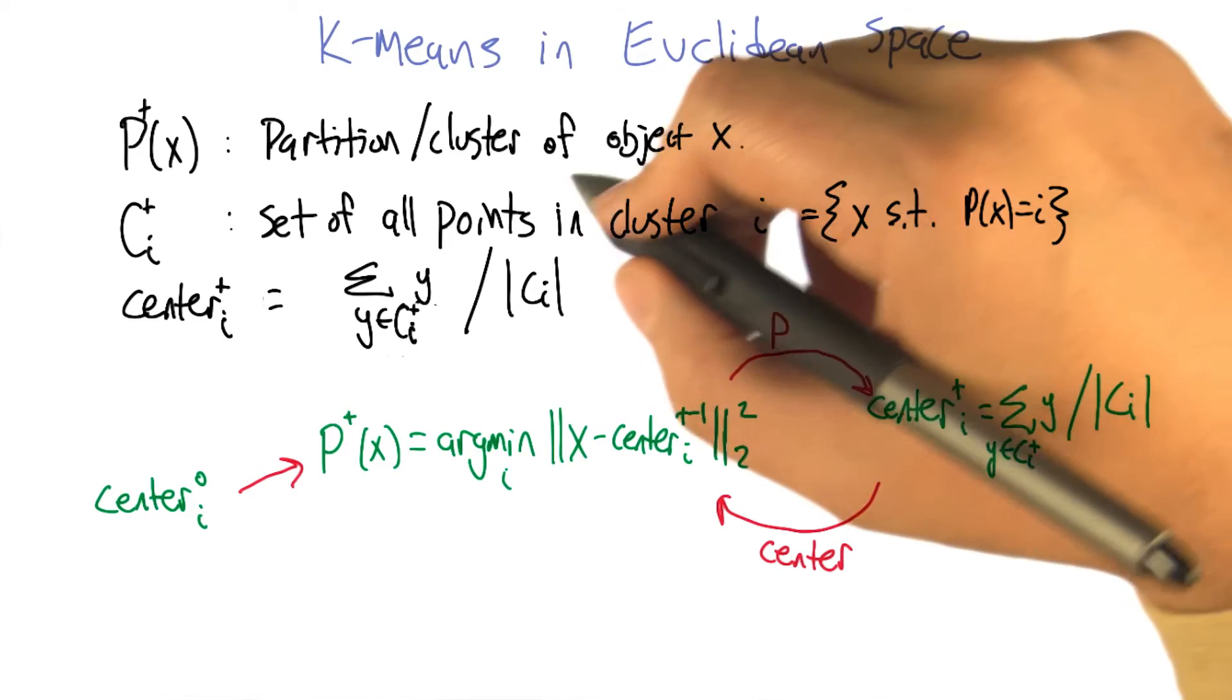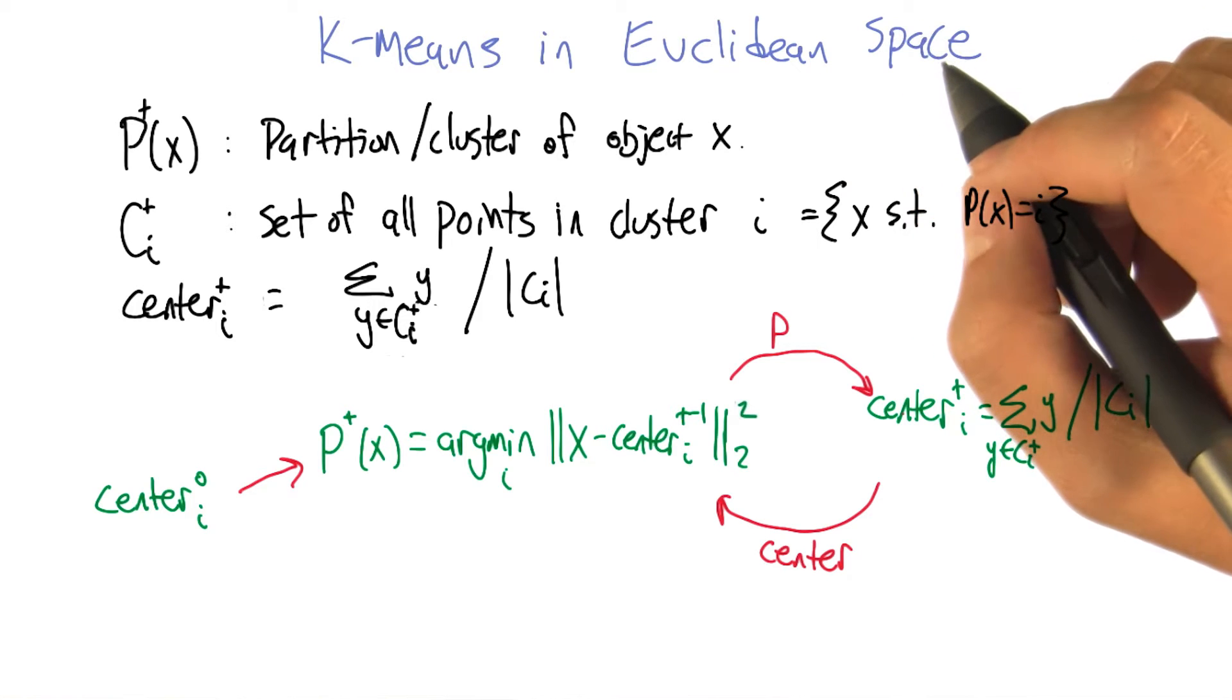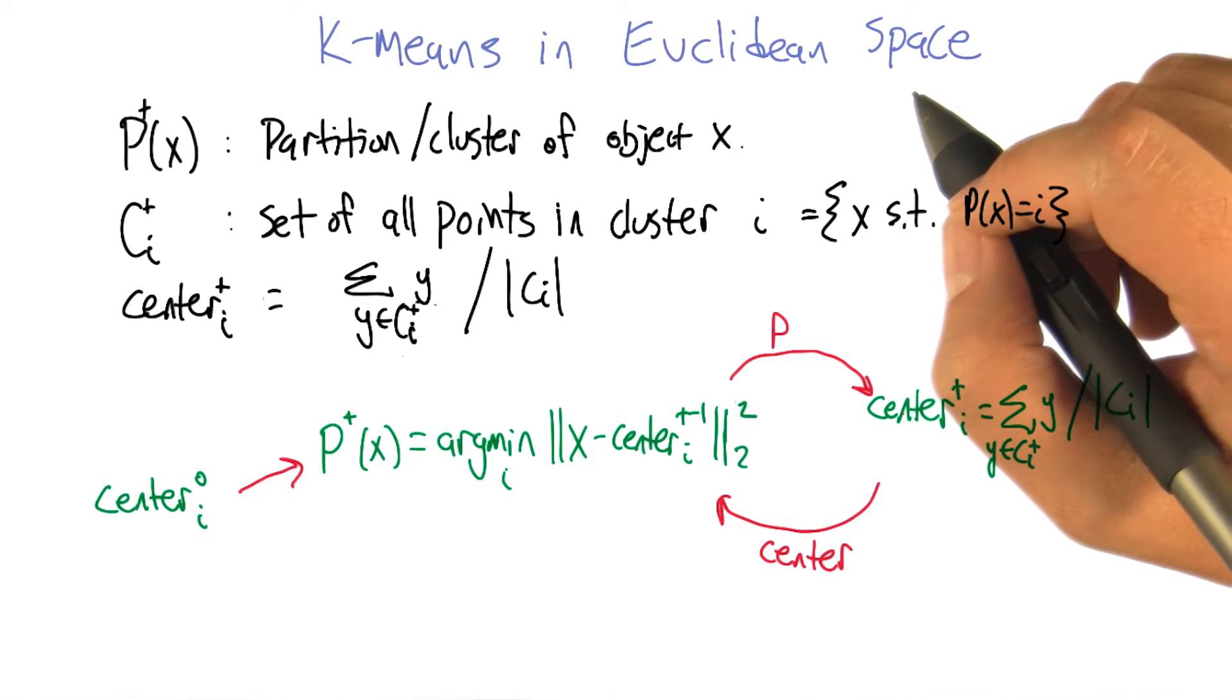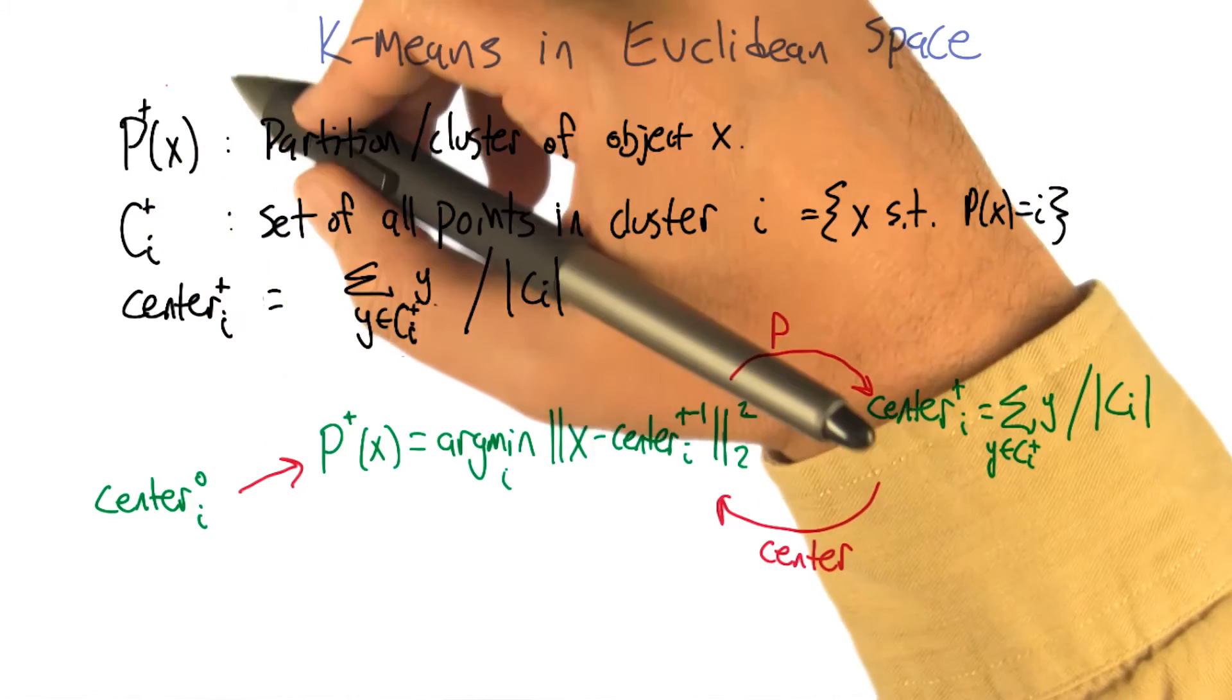What I'd like to do is work up to a proof that k-means does something good. To do that, I think it's helpful to have more precise notation than before. We're going to work up to doing k-means in Euclidean space.